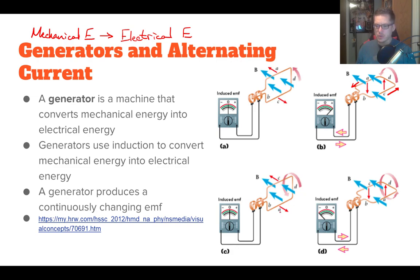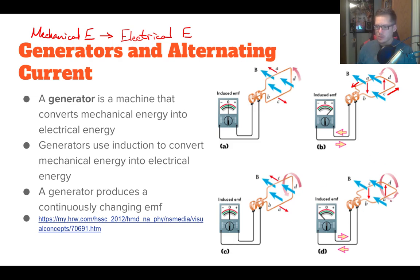Once we're parallel again, now completely upside down from where we started, there's absolutely no force again — back to zero induced EMF. Then, when we're perpendicular again, the arrows are flipped from what they were before: A is now going away from the EMF and B is going towards it, resulting in a negative EMF. So with these slip rings, we get an alternating current that alternates between positive and negative at regular intervals.